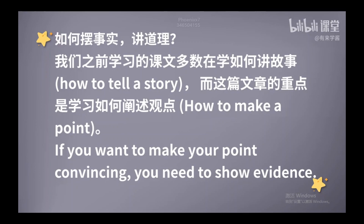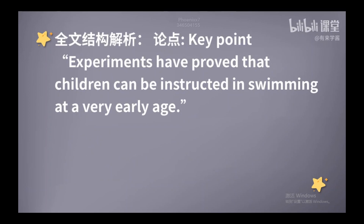这篇文章采用的呢，也是我们之前讲过的金字塔结构，pyramid structure。文章一开头呢，就亮出了观点和结论，然后再给出事实证明，先讲道理，再摆事实。所以这篇文章呢，是一篇小型的议论文。它的论点在哪呢？对了，就是文章的首句，开门见山给出了一个结论。Experiments have proved that children can be instructed in swimming at a very early age. 一开头就说，实验证明，孩子们能够在很小的时候就接受游泳的训练。我们知道，观点和结论，这是一篇议论文当中最重要的信息。所以把这个信息放在文章的最开头，然后再展示论据进行论证。这体现了什么思维方式呢？